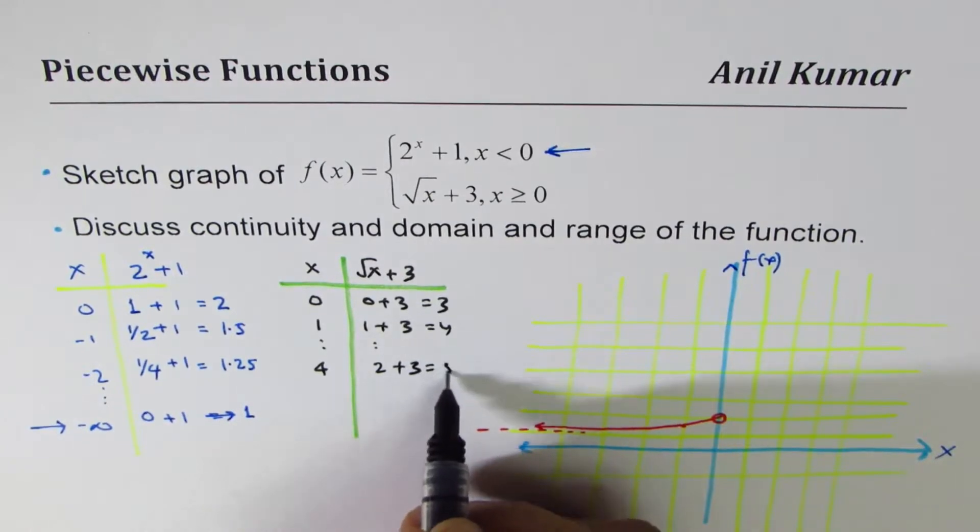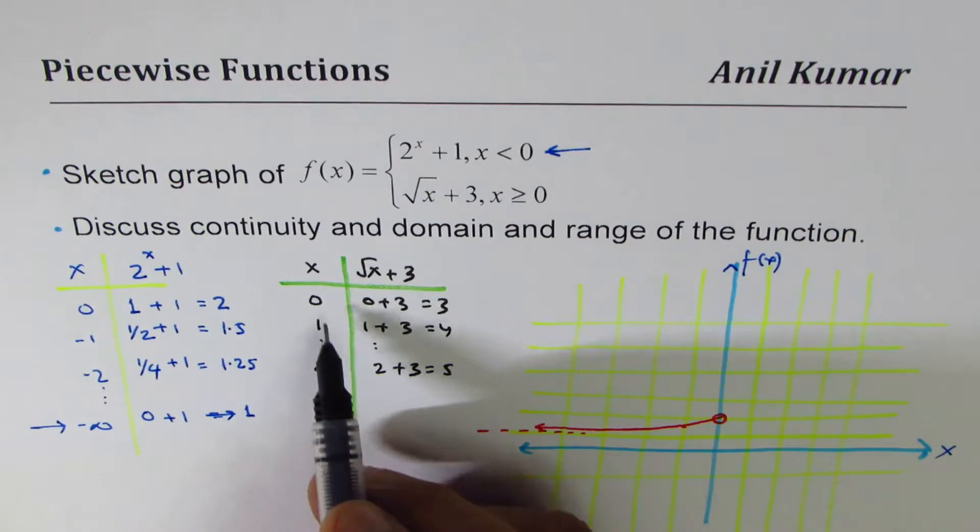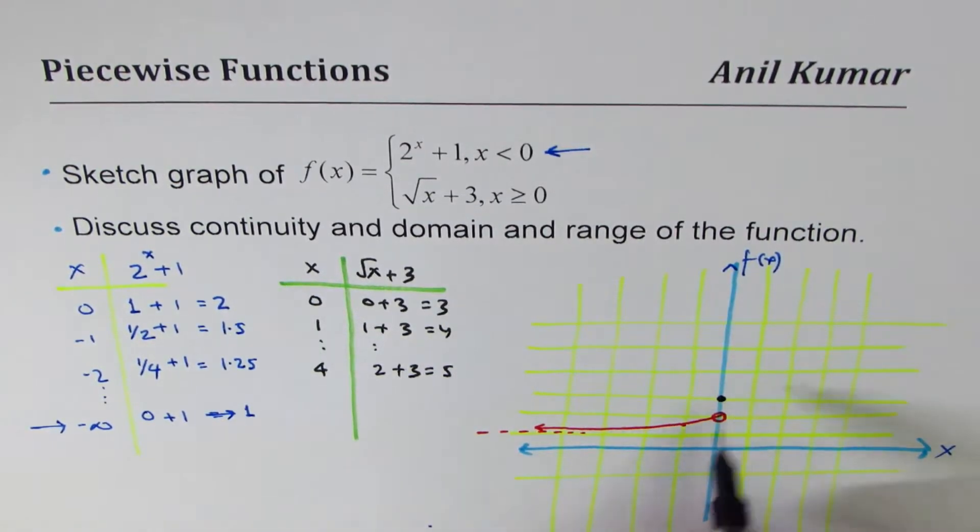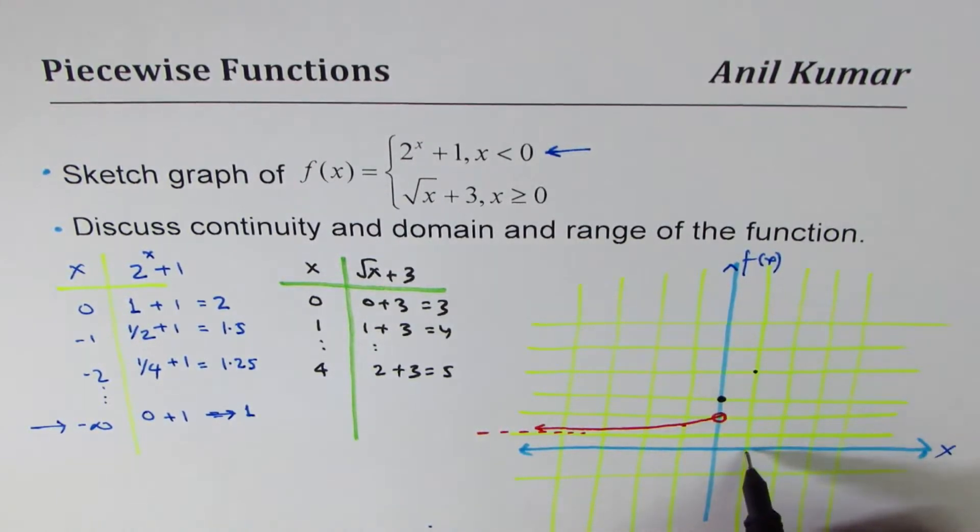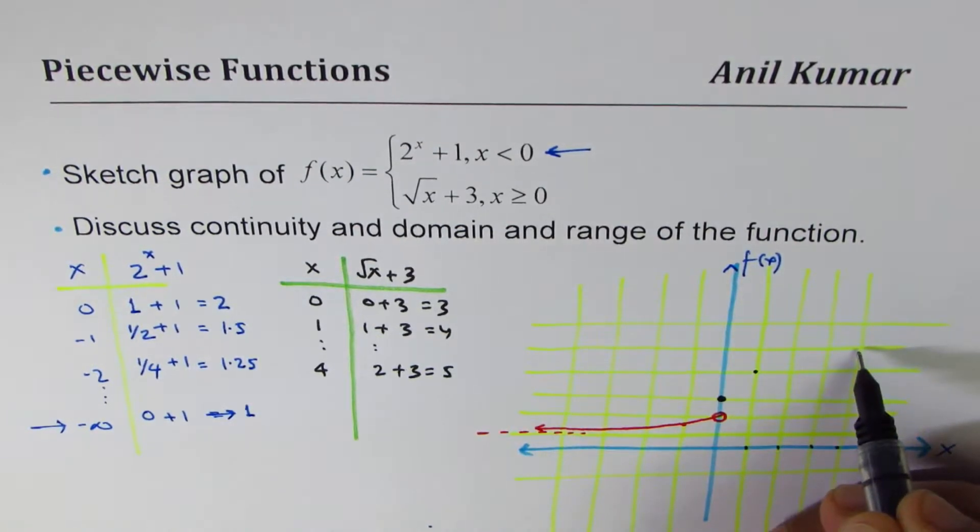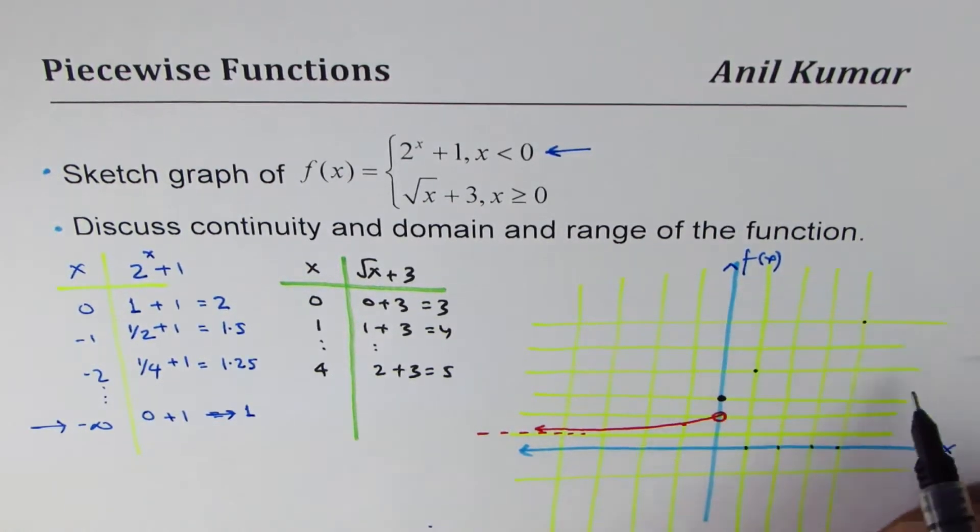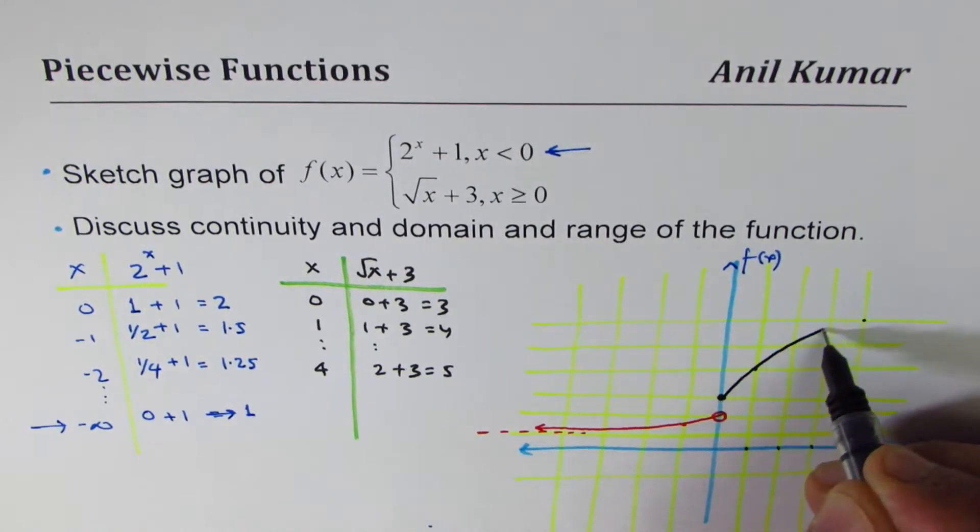So the values here are: at 0 it is 3, so 1, 2, 3, and this is filled in. Correct. At 1 it is 4. At 4 it is 5, so that's the graph which you get. So this is the other part of this piecewise function. As you can see, they don't join one another.